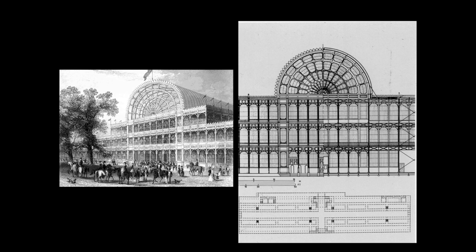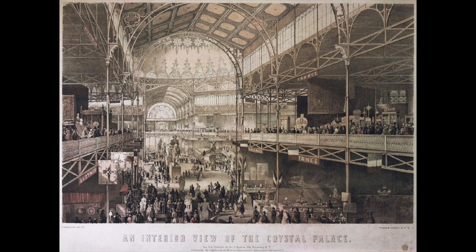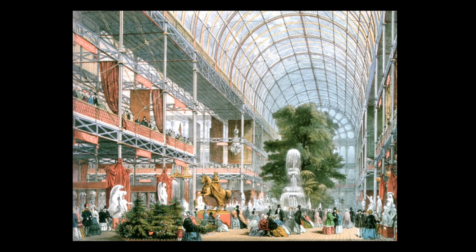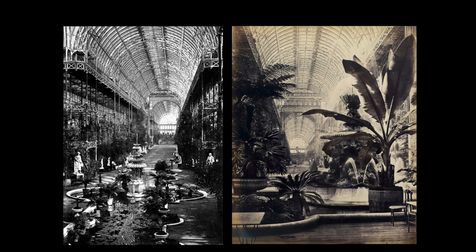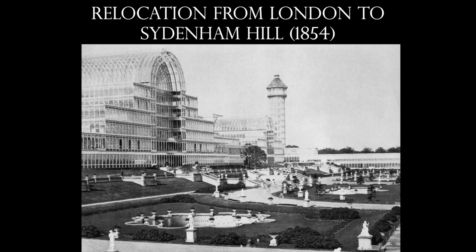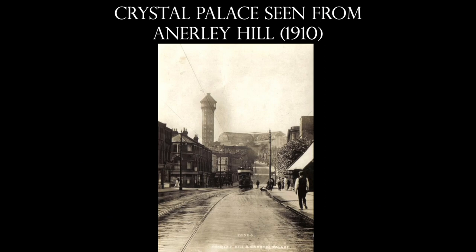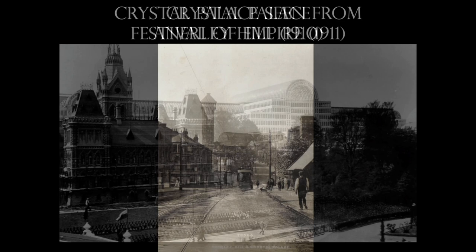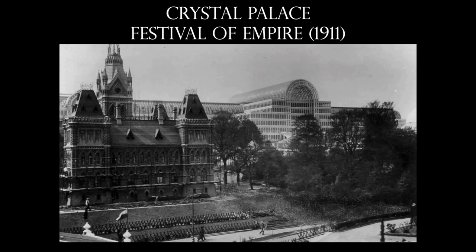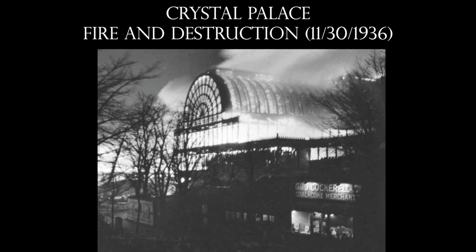The Crystal Palace is an incredibly awesome building, and with it being the very first World's Fair, that makes it even more special. It was relocated after the fair. Unfortunately, it does not exist anymore — in 1936, it burned down. The wood that was encasing the cast iron caught fire, and it got so hot that the glass melted. There were newspaper reports of molten glass running down the streets.